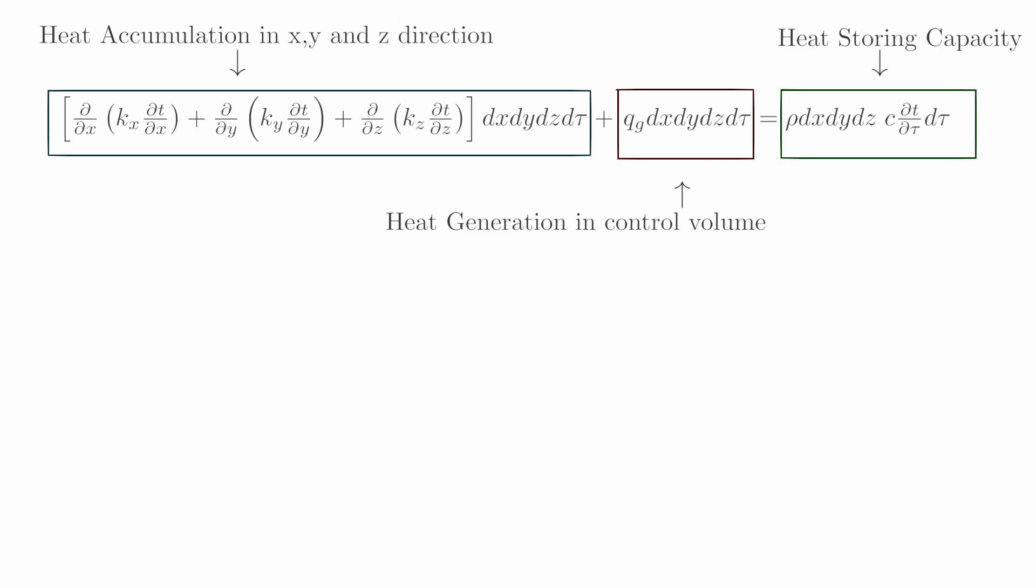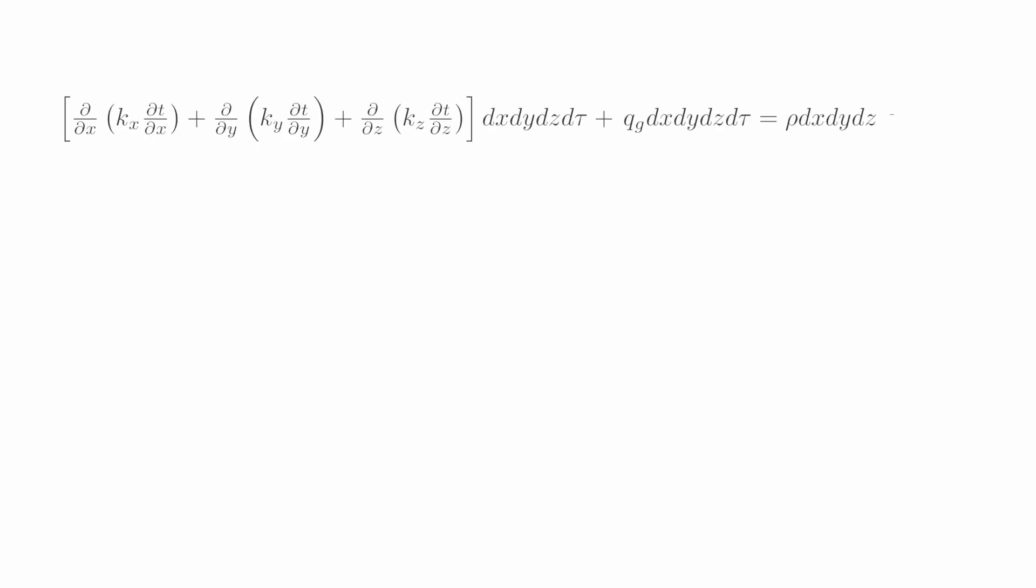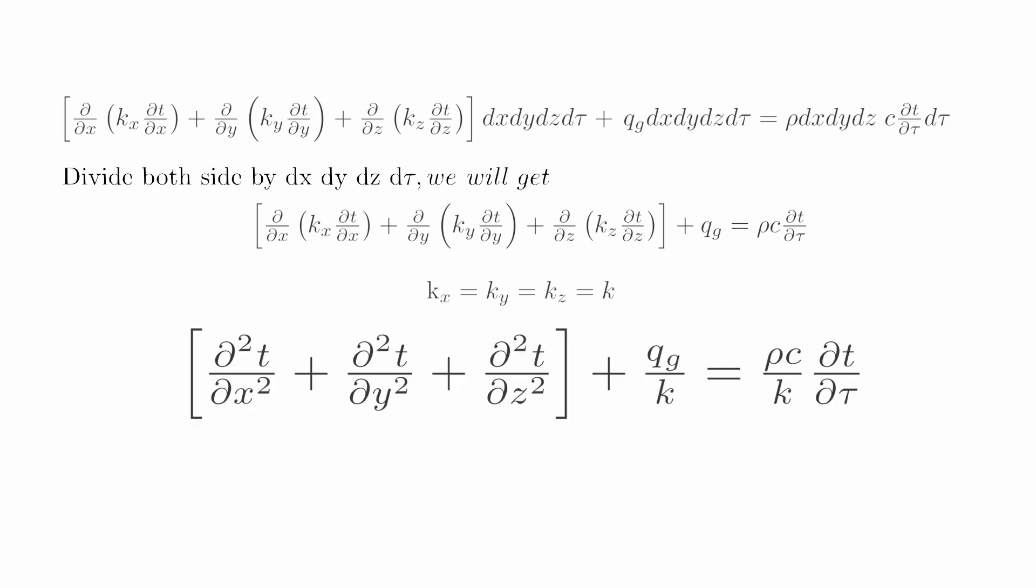If we divide both sides by dx dy dz and dτ, we get this equation. Now let's assume the material is homogeneous, continuous, and isotropic, so thermal conductivity is the same in all directions: kx = ky = kz = k. Dividing both sides by k gives this equation. Here α is called thermal diffusivity, where α = k/(ρc).